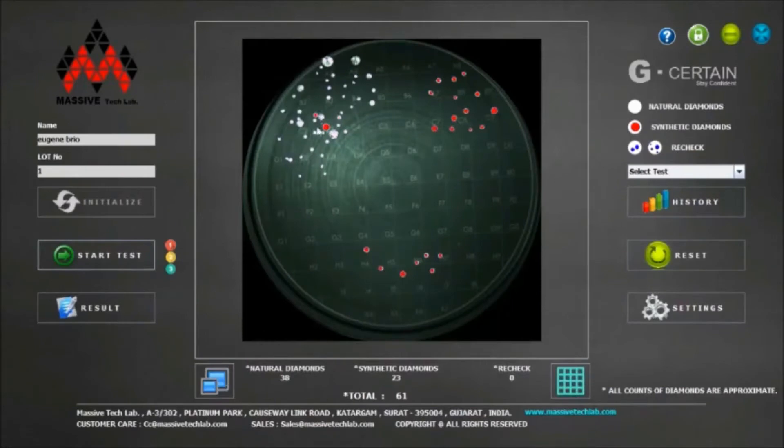By clicking result button, we can see the result in result image. Diamonds which are having red color mark on it are prone to be synthetic, whereas diamonds which are white color are natural one.